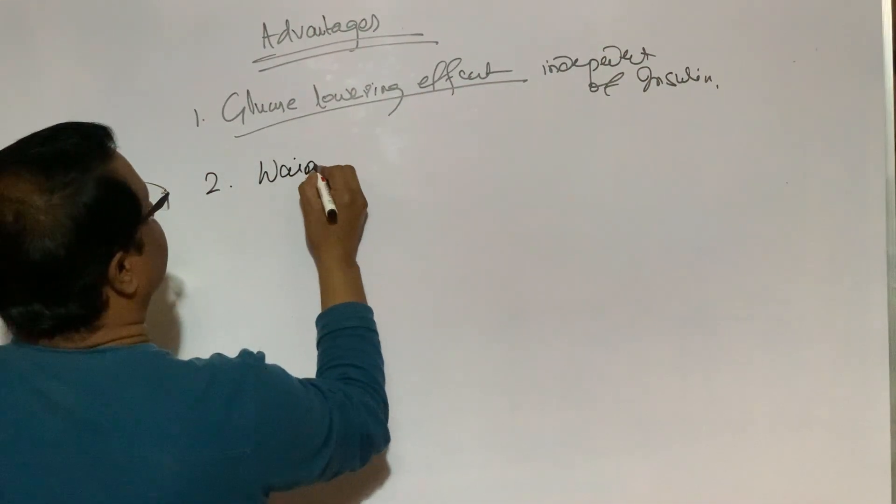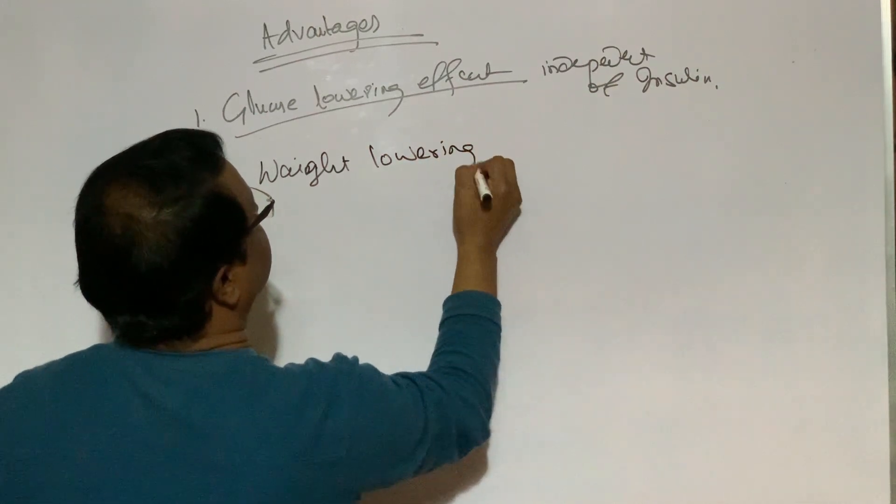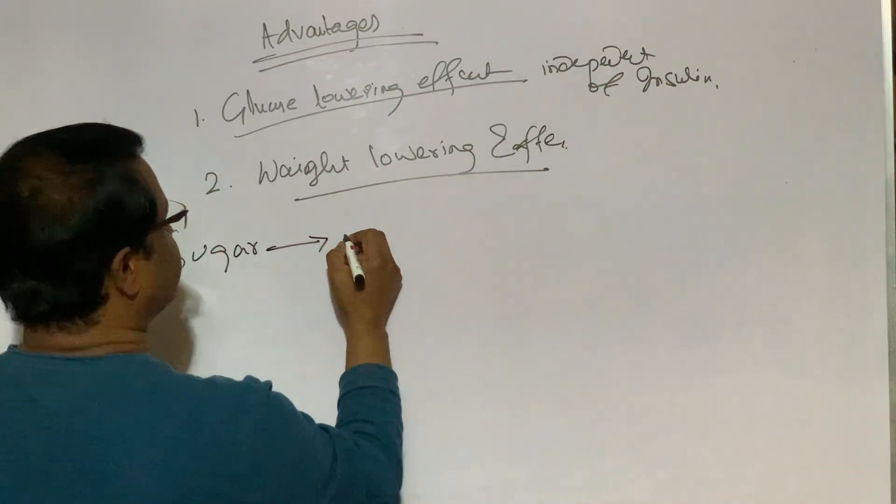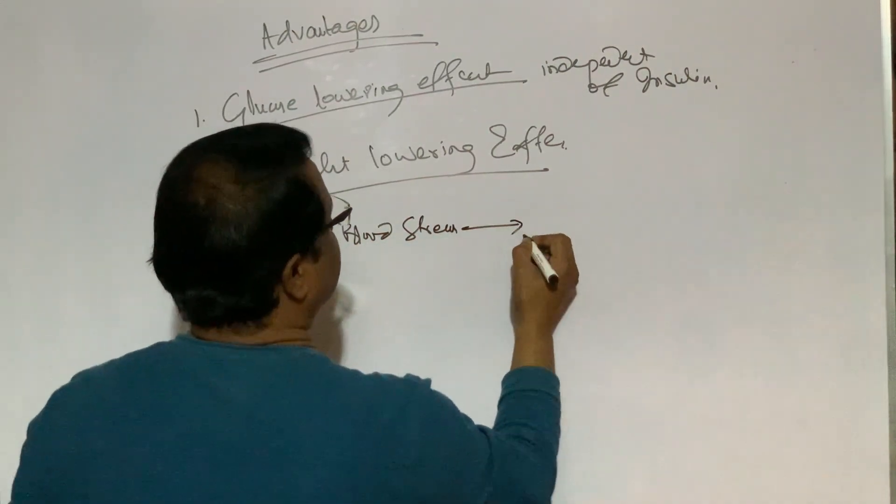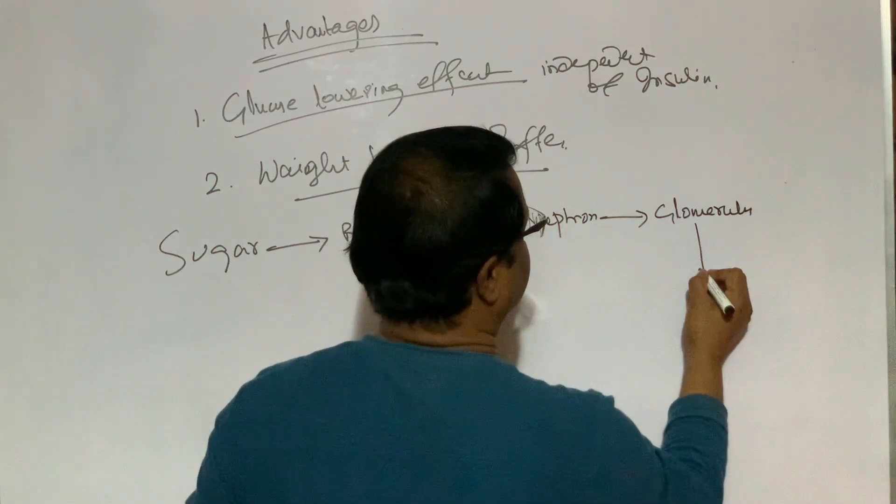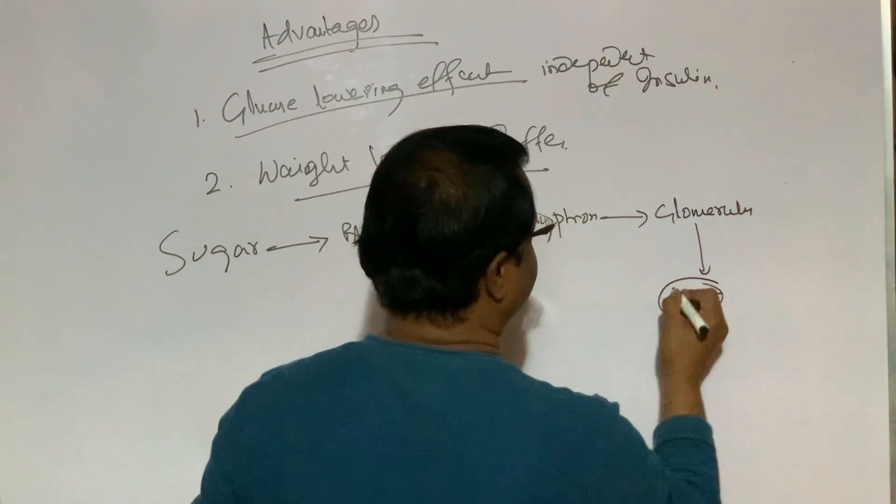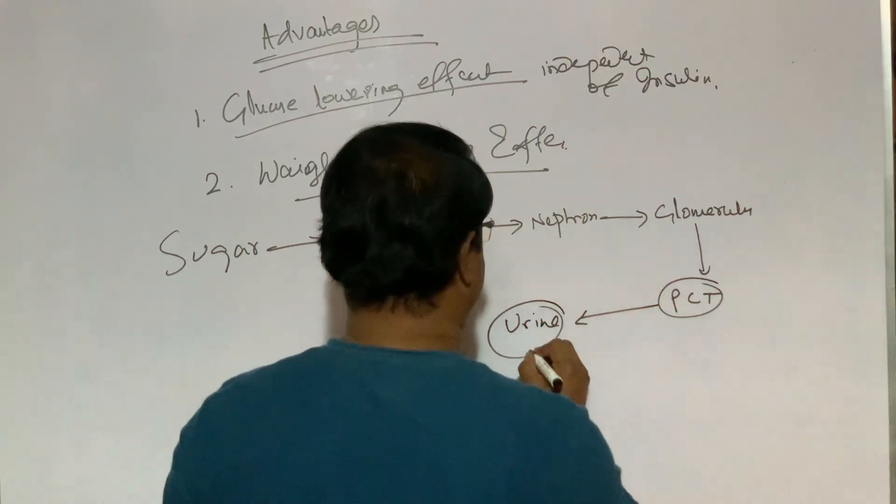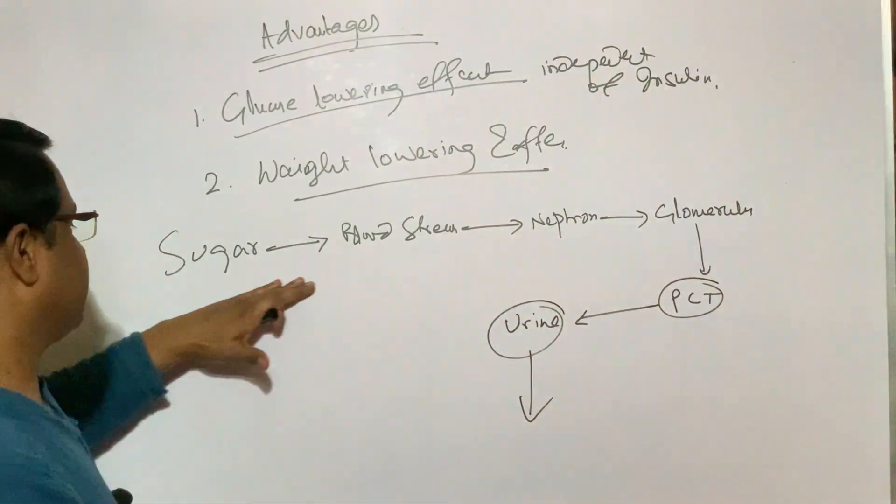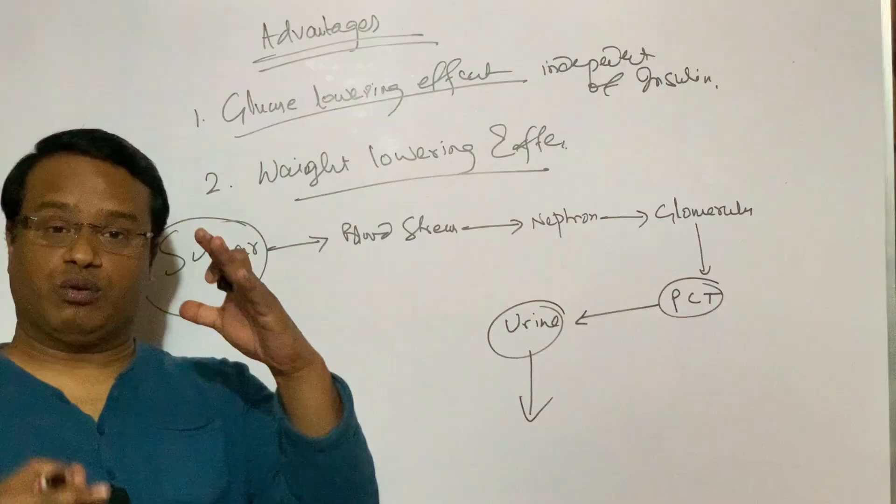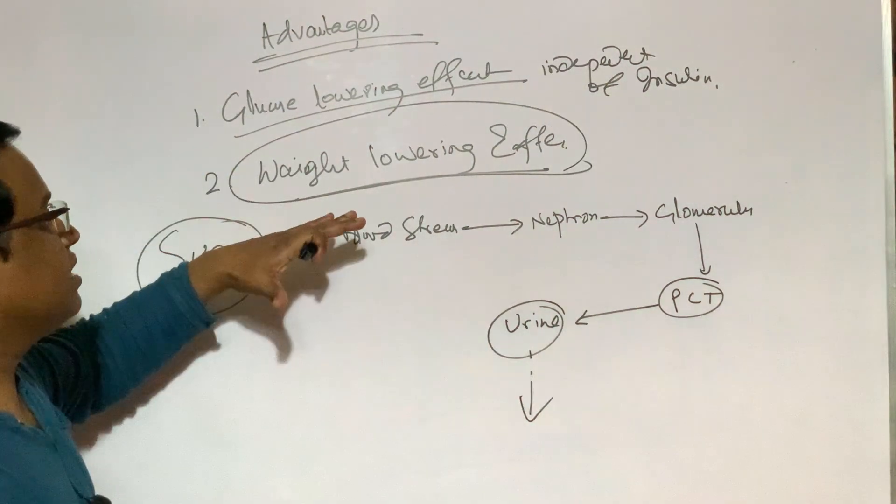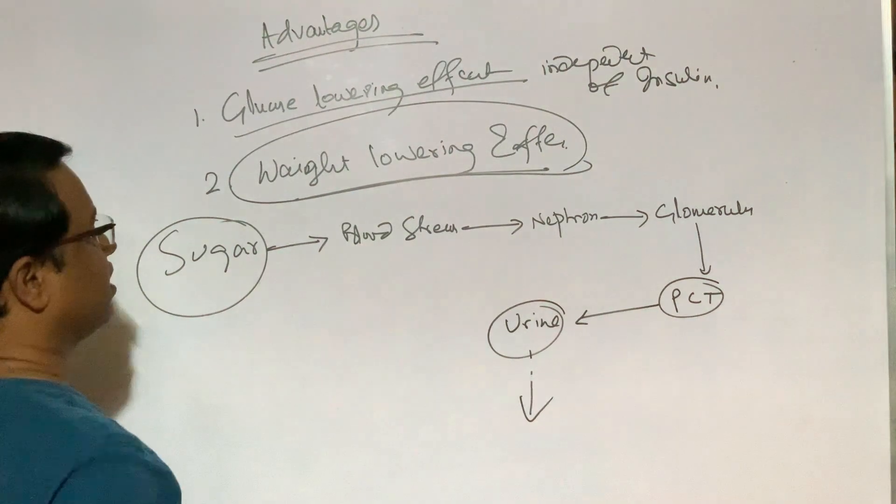Number two, weight lowering effect. Sugar into bloodstream, nephron, glomerulus, proximal convoluted tube, urine. Glucose is drained via urine. In this way, blood sugar stays always in lower level and its weight lowering effect is very vital. It has weight lowering property.